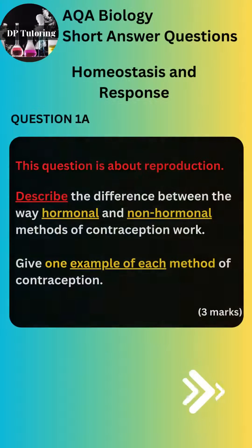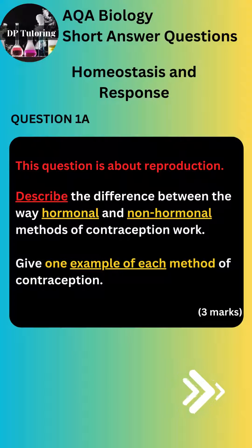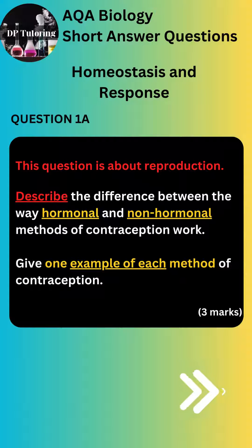This question is about hormones and reproduction. Describe the difference between the way hormonal and non-hormonal methods of contraception work. Give one example of each method of contraception. You will not gain full marks without an example.